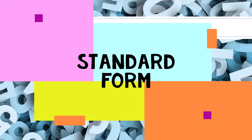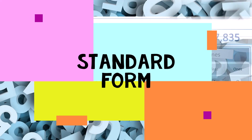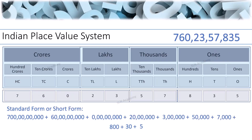Standard form or short form: when a number is written in figures, it is known as the standard form, also referred to as the short form. So the standard form of this number is 760,23,57,835.